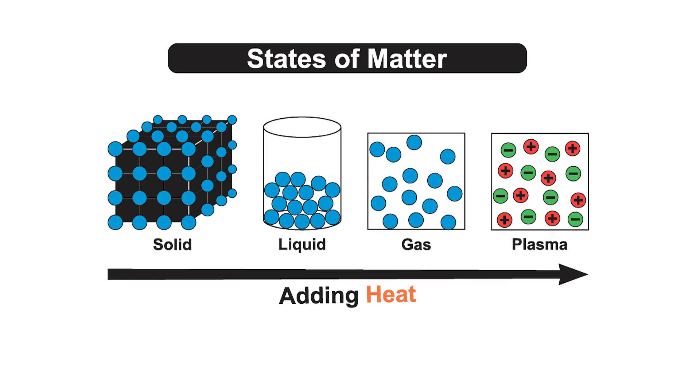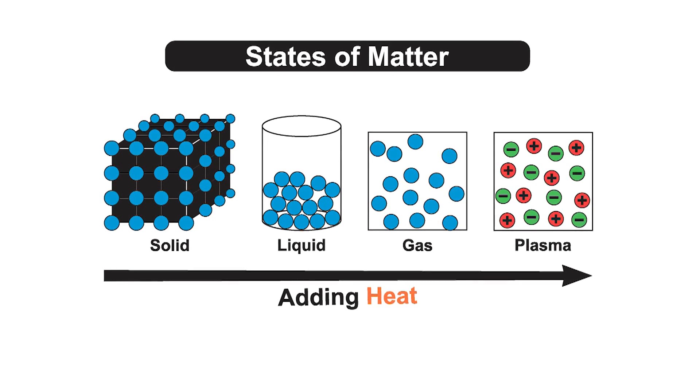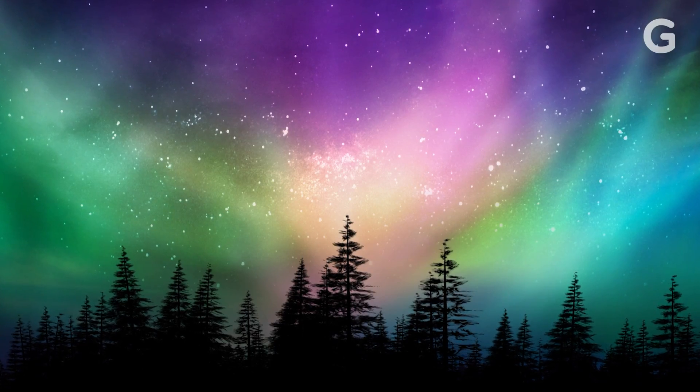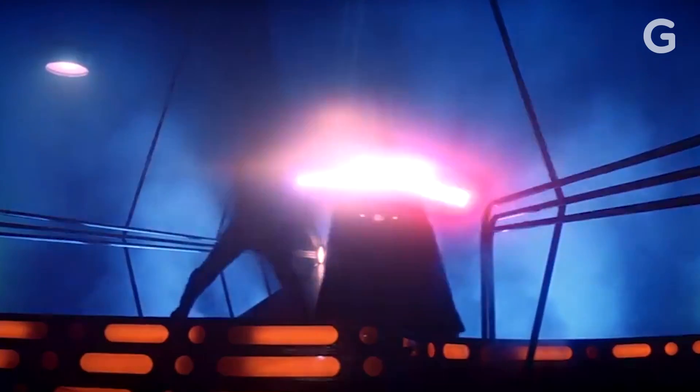It's like a soup of charged ions and electrons. The northern lights, lightning, and the Sun are all examples of plasma. But there are a few problems to consider when making a real-life lightsaber like from Star Wars.